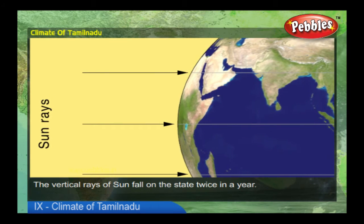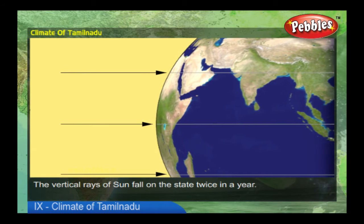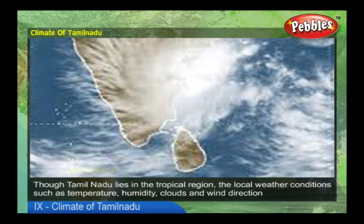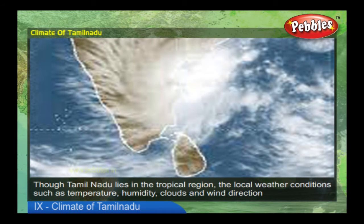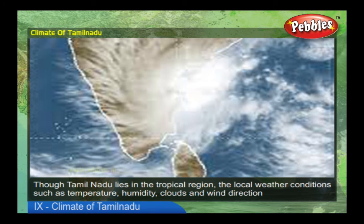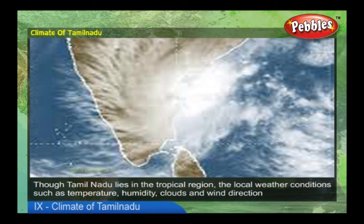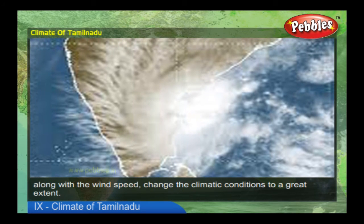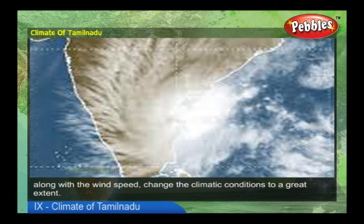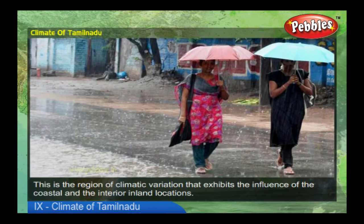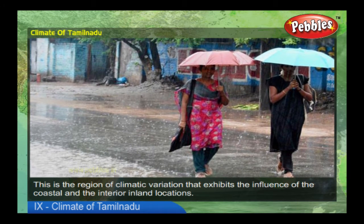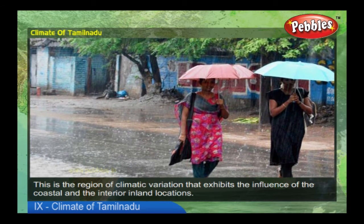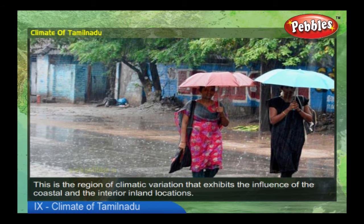The vertical rays of the sun fall on the state twice in a year. Though Tamil Nadu lies in the tropical region, local weather conditions such as temperature, humidity, clouds, wind direction, and wind speed change the climatic conditions to a great extent. This is the region of climatic variation that exhibits the influence of coastal and interior inland locations.